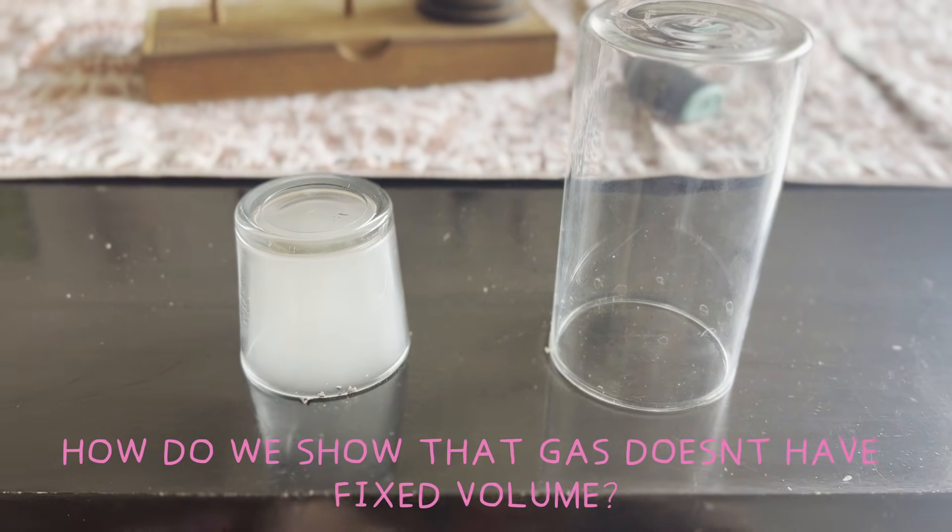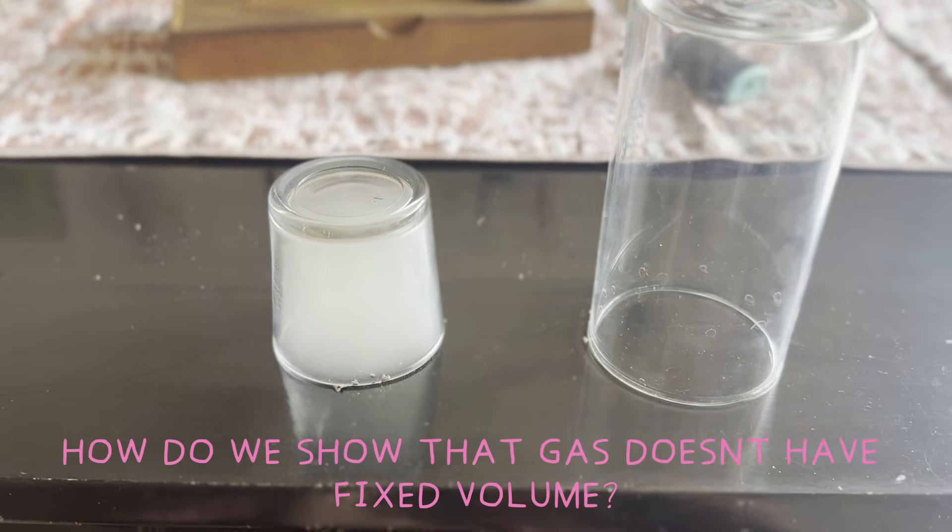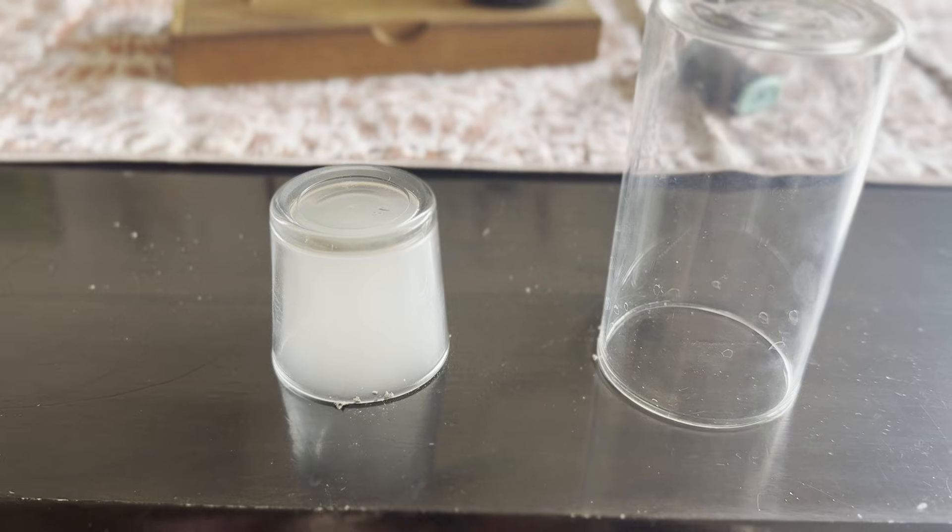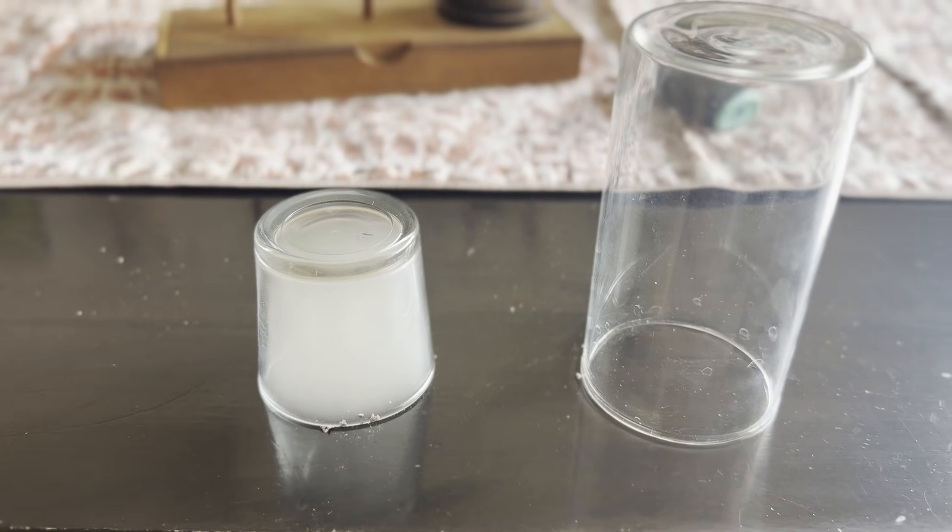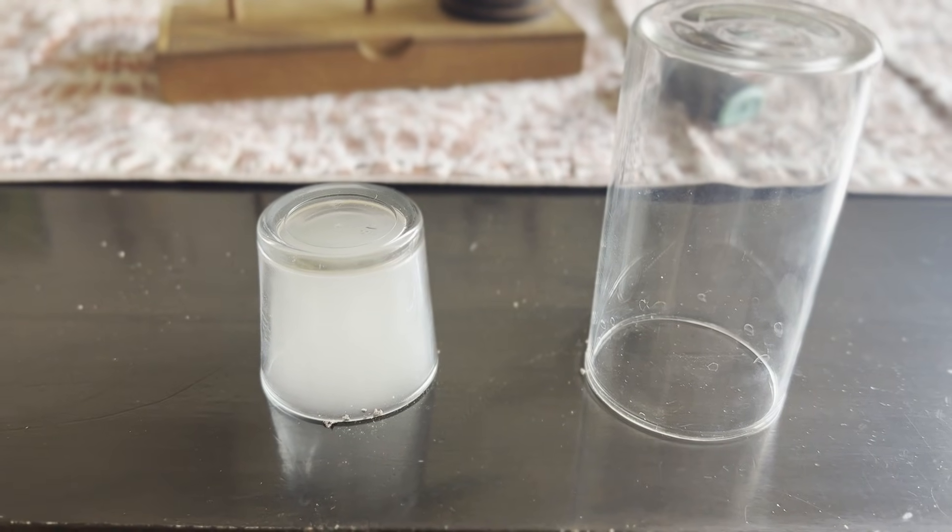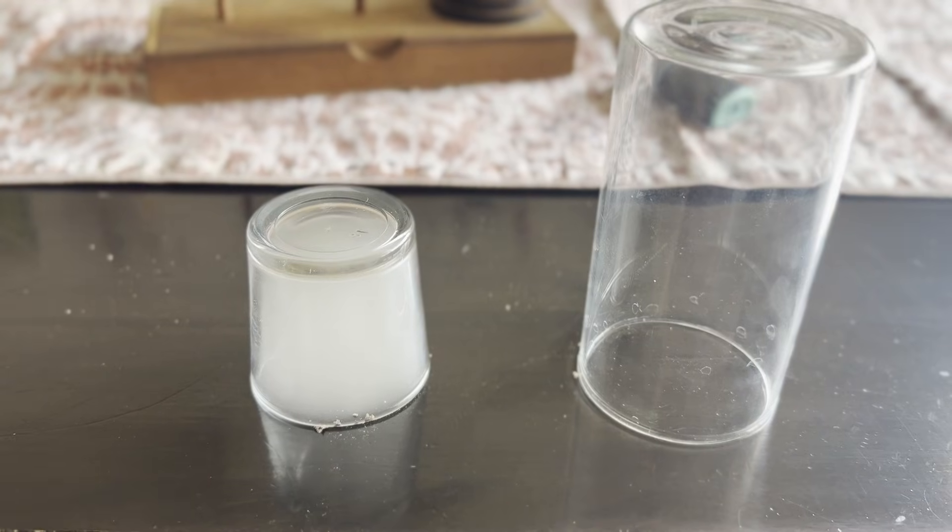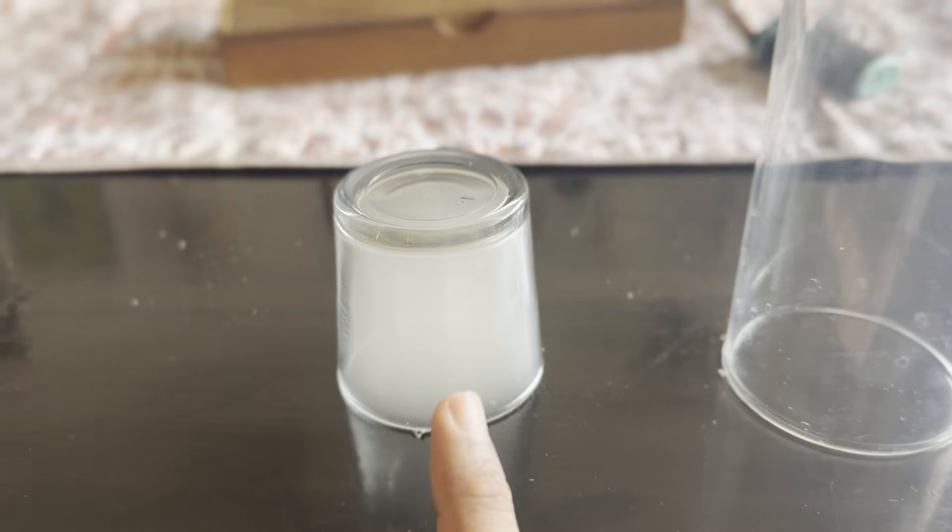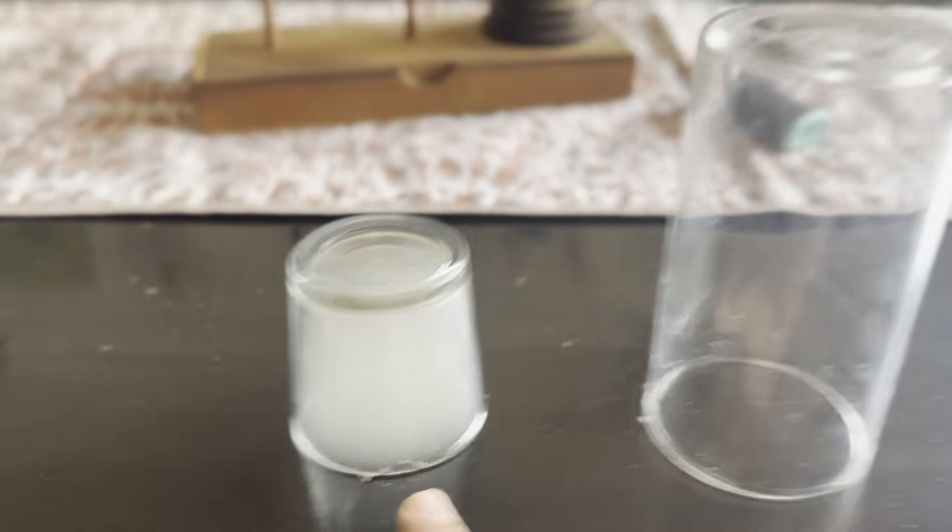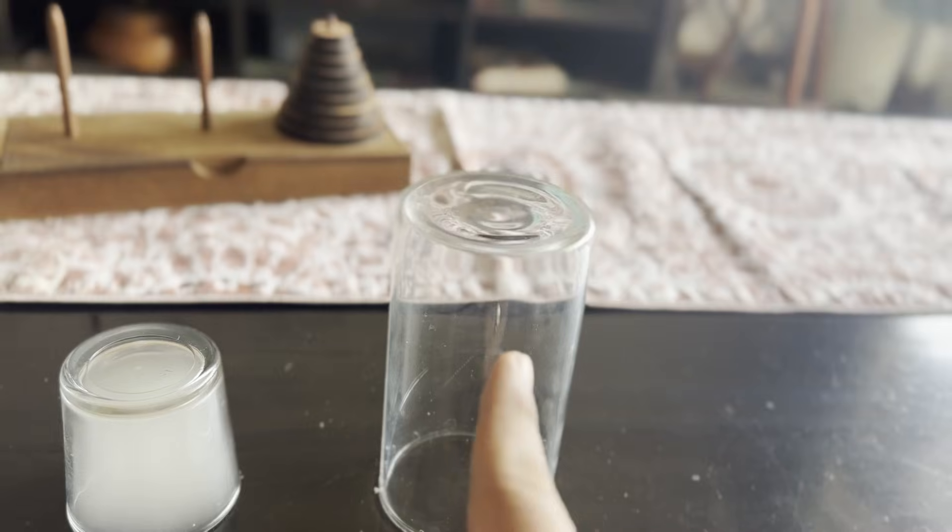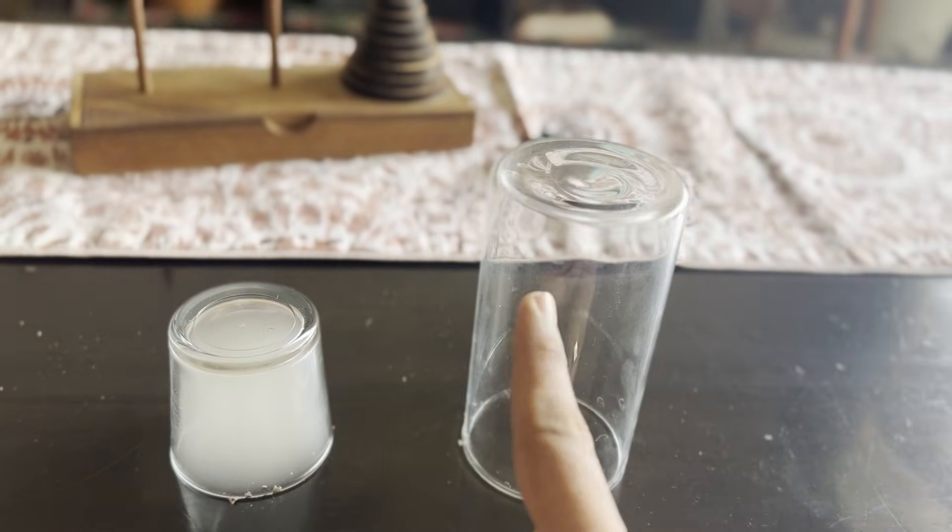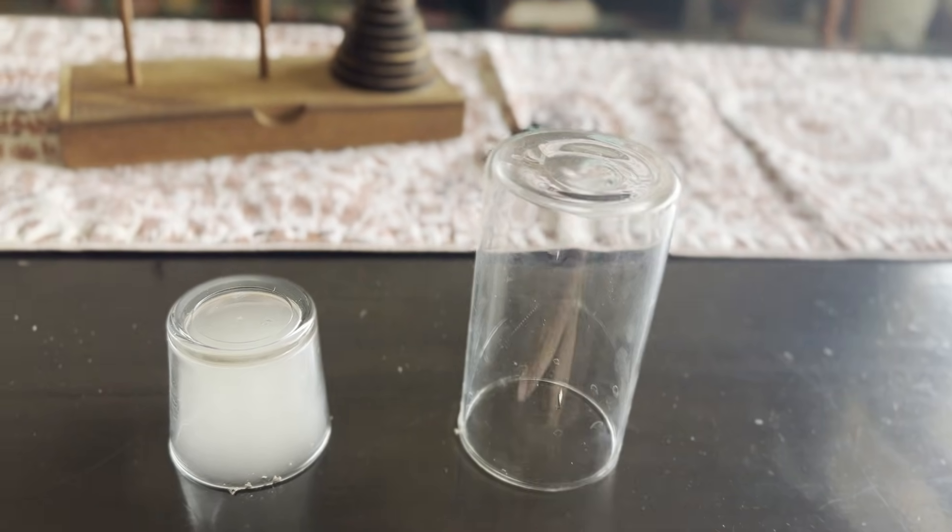So how do we show that gas doesn't have a fixed volume? From the previous three cases, the small glass, the medium glass, and the big jar, we've already seen that gas doesn't have a fixed shape. It takes the shape of whatever container it is in. But what about volume? Look at this small glass. It's completely filled with smoke. Now, we know this glass is smaller than the big one, right? That means the small glass has a smaller volume than the big one, or different volume than the big one, correct?